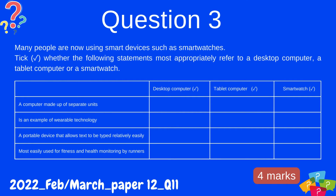Question 3: Many people are now using smart devices such as smartwatches. Tick whether the following statements most appropriately refer to a desktop computer, a tablet computer, or a smartwatch. 1: A computer made up of separate units. 2: Is an example of wearable technology. 3: A portable device that allows text to be typed relatively easily. 4: Most easily used for fitness and health monitoring by runners.